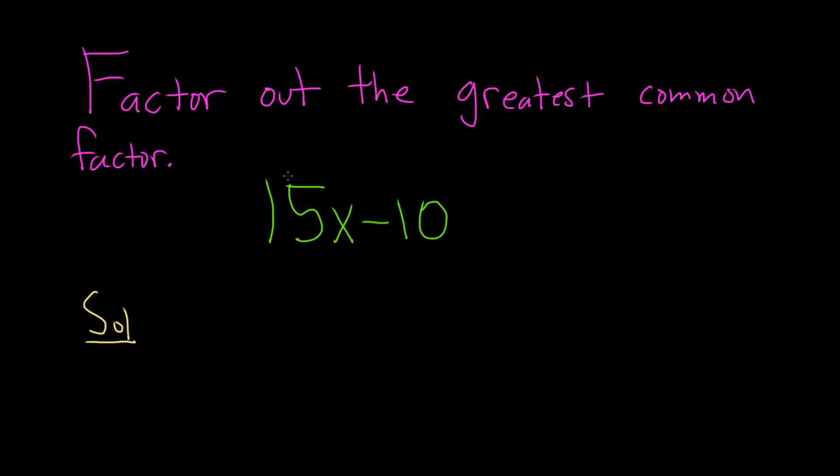The greatest common factor is exactly what it says it is. It's a common factor of both of these terms and it's the biggest one. So it looks like 5 is going to be the greatest common factor because 5 goes into 15x and 5 goes into 10 as well.